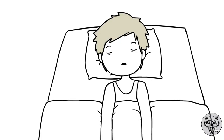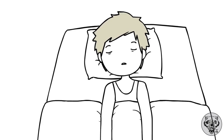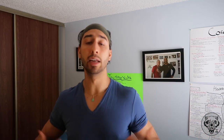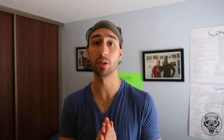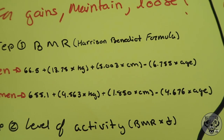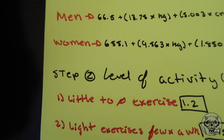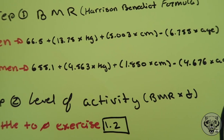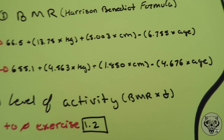Your BMR is your Basal Metabolic Rate — that's how much your body will burn if you're doing pretty much nothing at all, like laying in bed sleeping all day. This is how much your body needs just to function: your organs, your brain, everything. To calculate this, I like to use the Harris-Benedict equation. It's different for men and women, but you just put in your weight in kilograms, height in centimeters, and your age, and you get your BMR number.